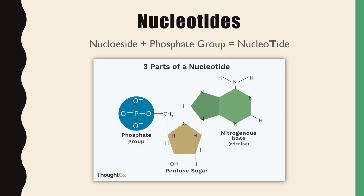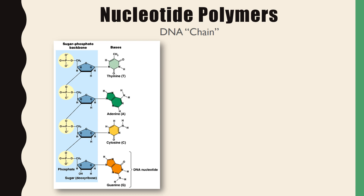In this image we can see the pentose sugar has just the H and no OH group, confirming it is deoxyribose. The nitrogenous base is adenine, identifiable by its double ring structure indicating a purine. A nucleotide polymer is simply a chain of nucleotides joined together — essentially showing you half of that ladder formation of DNA, with pentose sugars and phosphate groups forming one side (the sugar phosphate backbone) and nitrogenous bases as half of each rung.